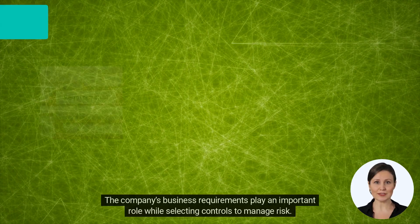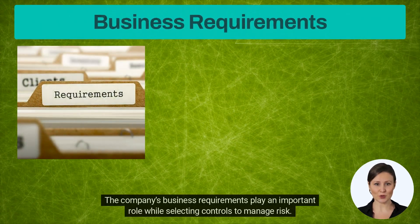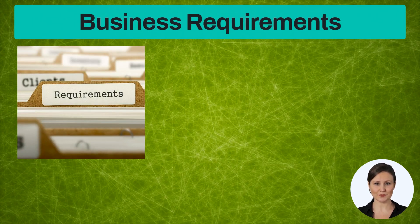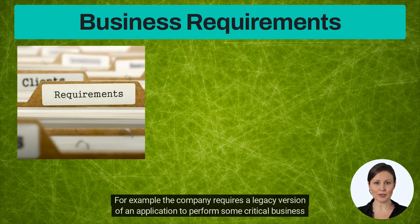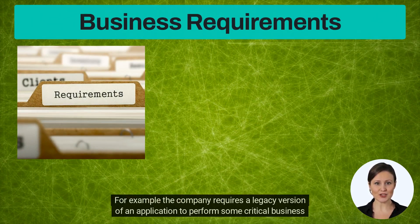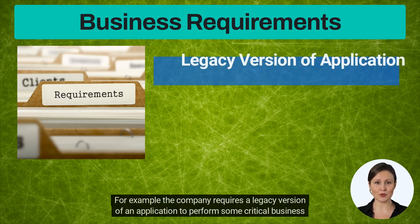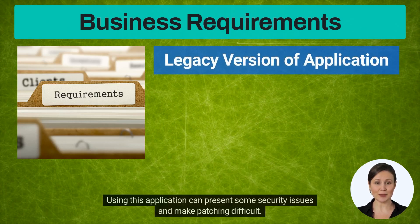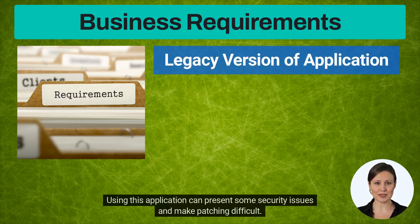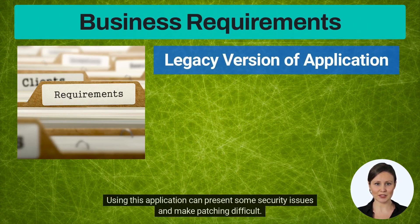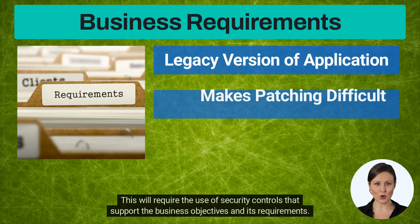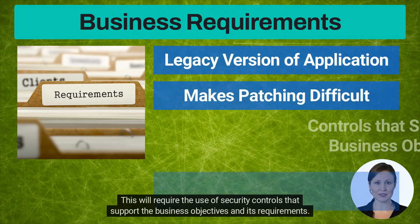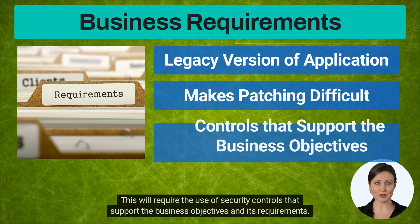The company's business requirements play an important role while selecting controls to manage risk. For example, the company requires a legacy version of an application to perform some critical business function. Using this application can present some security issues and make patching difficult. This will require the use of security controls that support the business objectives and its requirements.